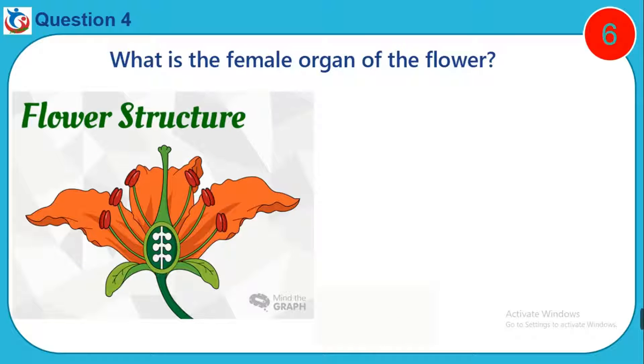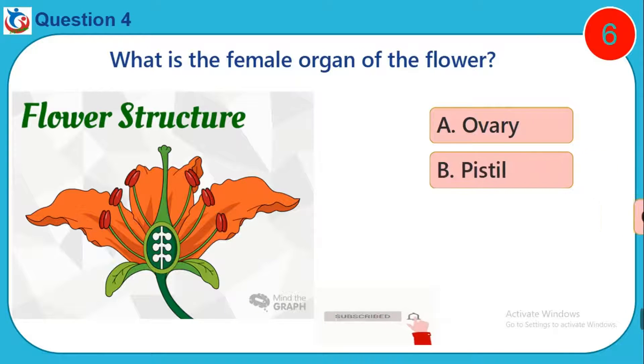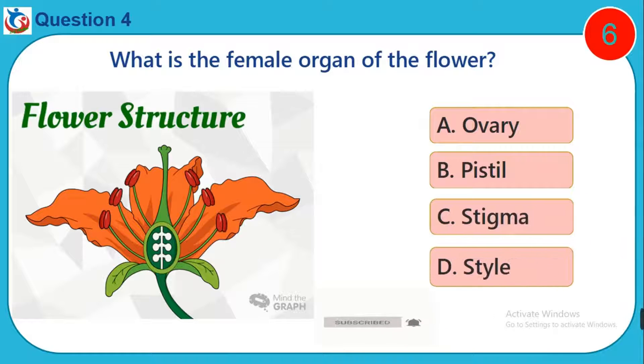Question 4. What is the female organ of the flower? A. Ovary. B. Pistil. C. Stigma. D. Stamen.